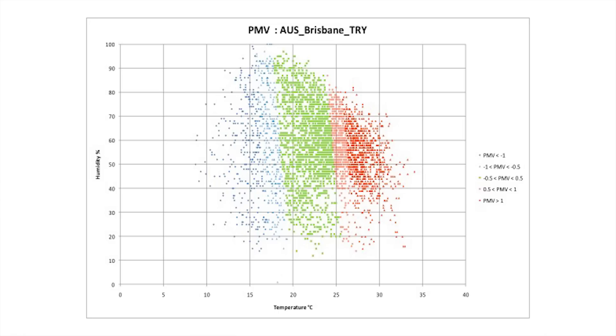The picture we're seeing now is Brisbane, and the colors are the predicted mean vote, which is a mathematical way of working out what people will feel in terms of comfort based on the humidity and the temperature. When it's green it's good, green is good. Red means that it's going to be too hot, and all those blue dots mean that it's going to be too cold. So what we can see in Brisbane, there's about 8,000 dots on this page representing each hour of the year.